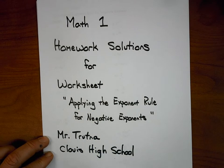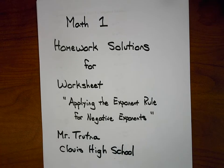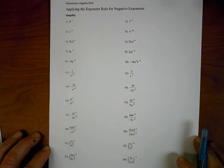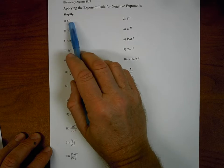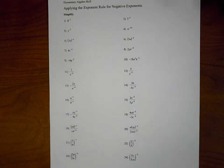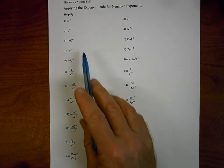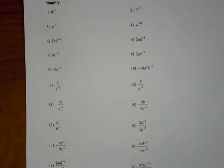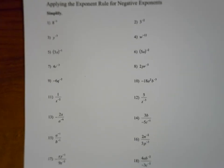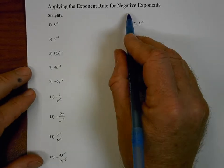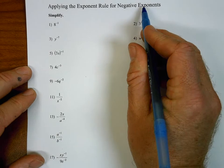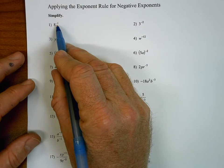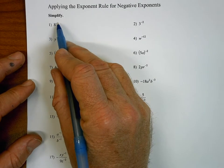Mathuan homework solutions for worksheet applying the exponent rule for negative exponents. This is Mr. Chutna from Clovis High School. We're going to go through and simplify each one of these problems using the concept of negative exponents. You should have already done this assignment and be checking your work as we go. Keep in mind that when we talk about negative exponents, there is a mathematical rule that you should never have a final solution that involves a negative exponent.